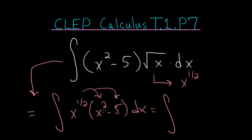So x to the one-half times x squared, since they have the same base, we add the exponents. One-half plus two is two-and-a-half, or five-halves. Then we have minus five times x to the one-half, and dx on the outside.